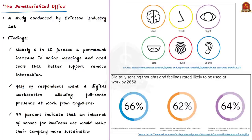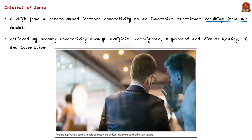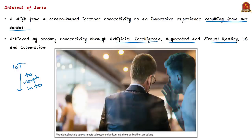Key findings of the report include: nearly 6 in 10 people predict a permanent increase in online meetings and say they need better tools to support remote interaction. Almost half of respondents want a digital workstation allowing full-sense presence at work from anywhere. As many as 77% indicate that the Internet of Senses for business use would make companies more sustainable. Internet of Senses means a shift from screen-based internet connectivity to an immersive experience resulting from our senses being connected in everyday life, achieved through artificial intelligence, augmented reality, virtual reality, 5G and automation.